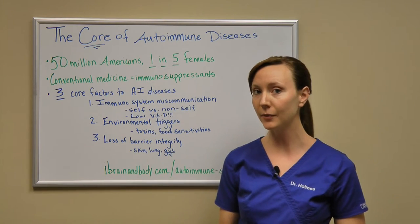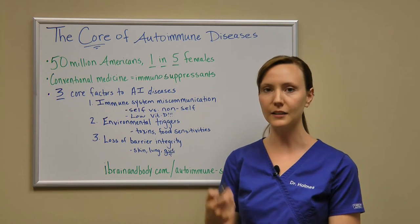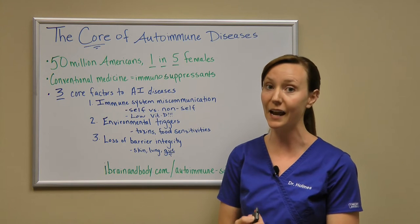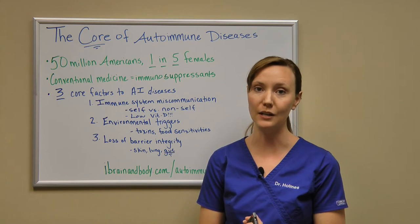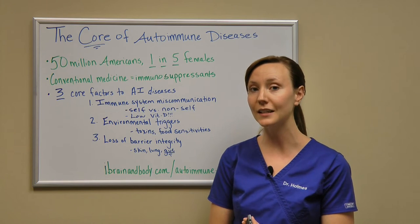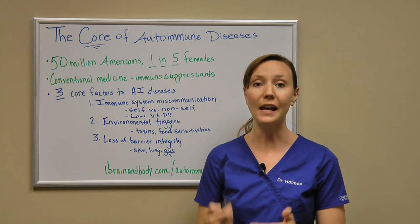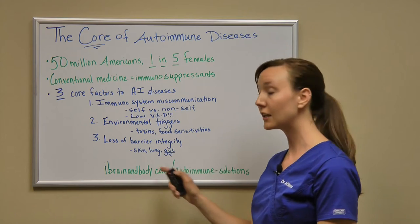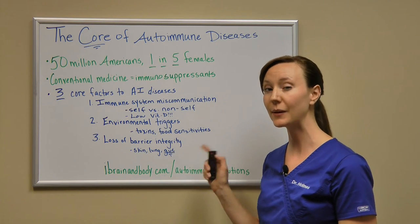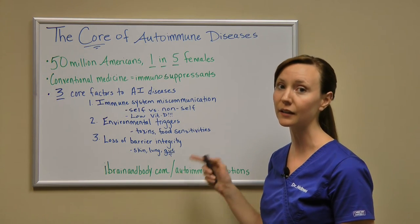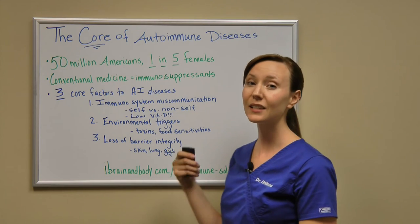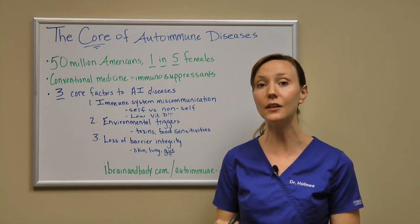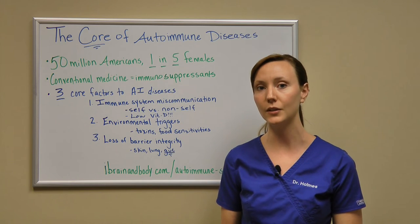So if you have gut problems — whether it's bloating, diarrhea, constipation, your classic gut symptoms — you definitely have immune system dysregulation. If you have an autoimmune disease, you have to look at the health of your gut. By taking care of just this one area, that's going to address about 80% of your overfiring immune system. That's one huge way you can start getting control of your autoimmune disease.